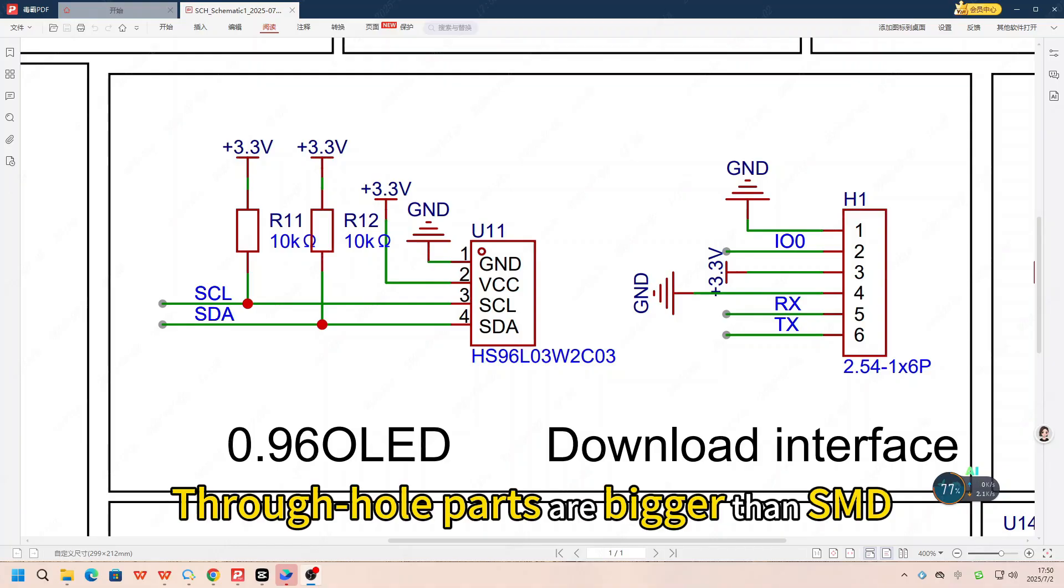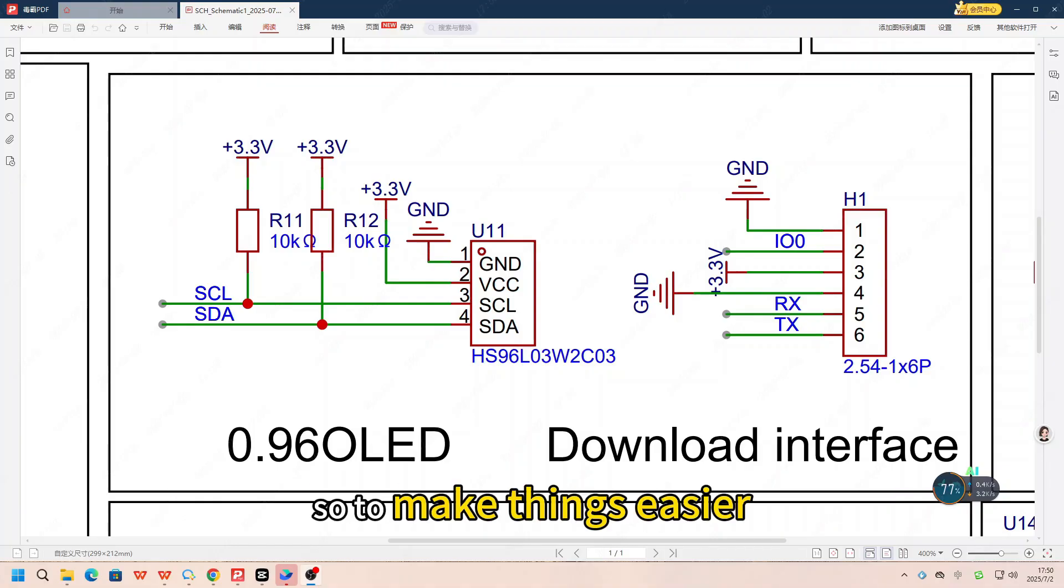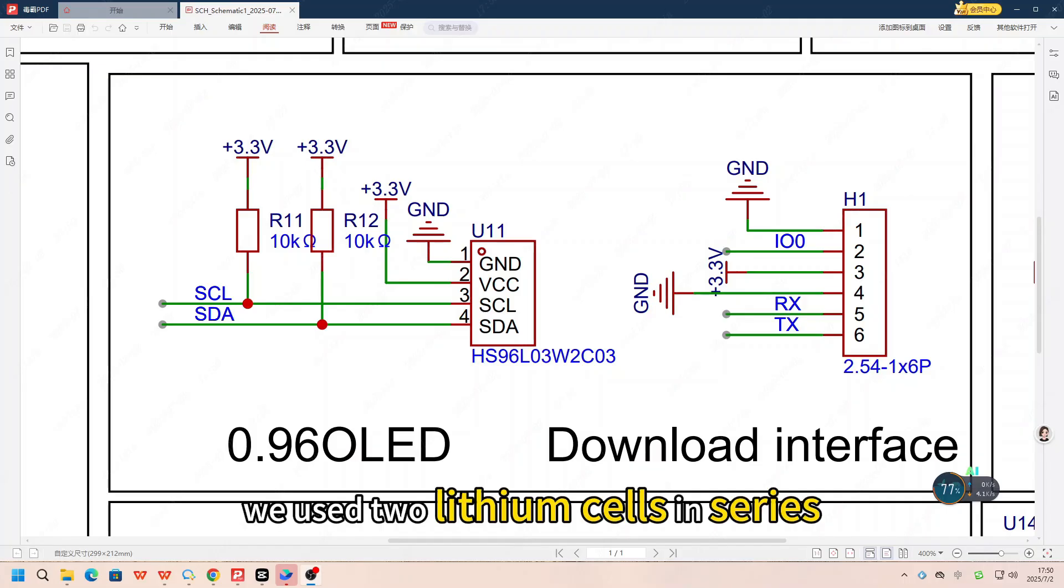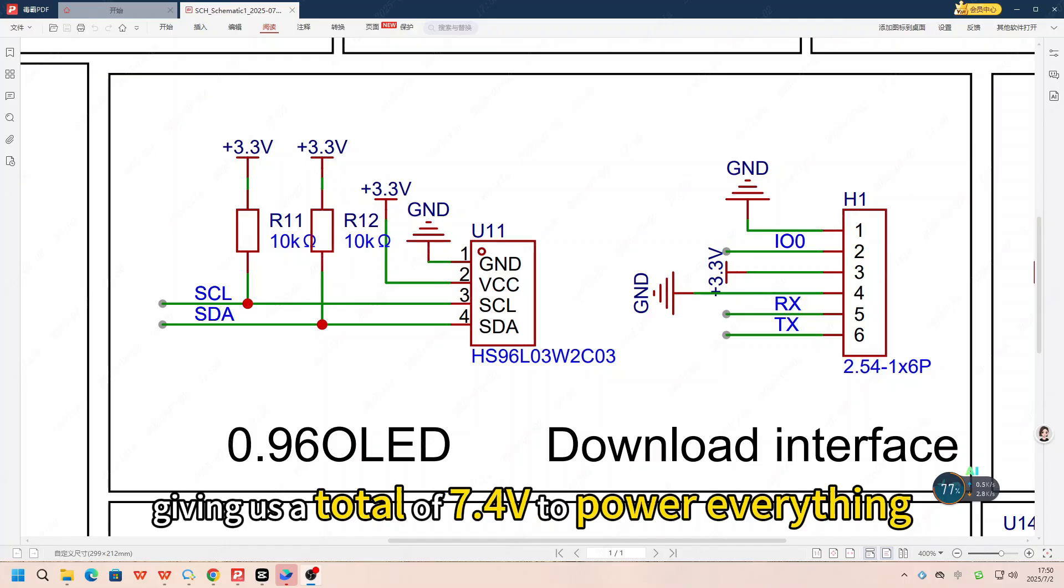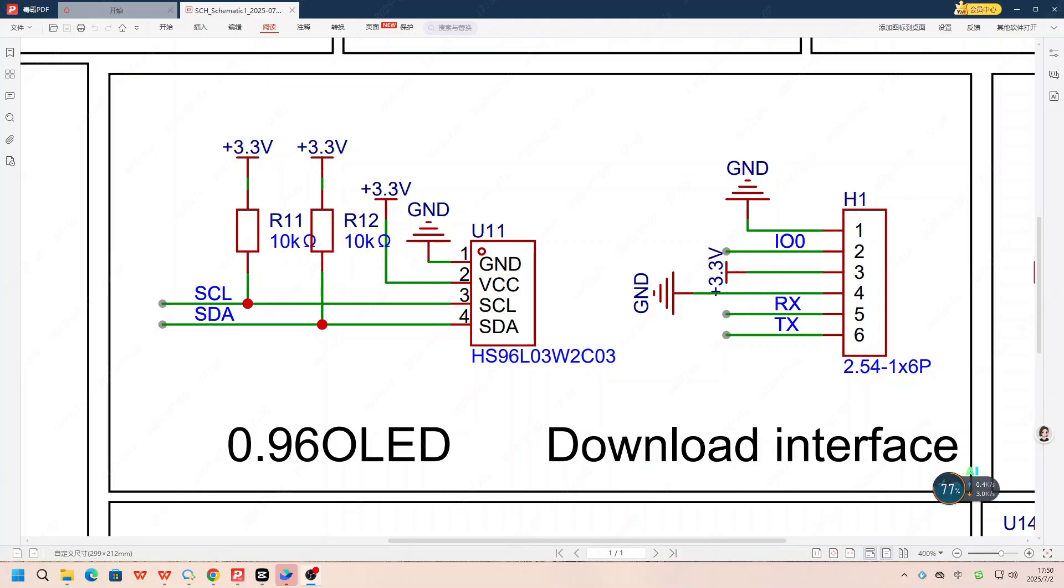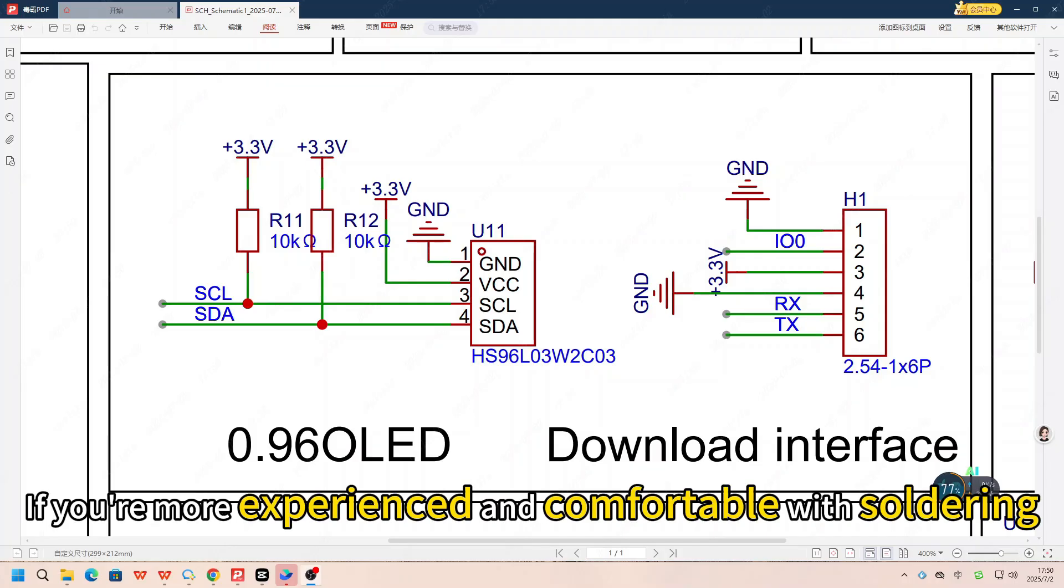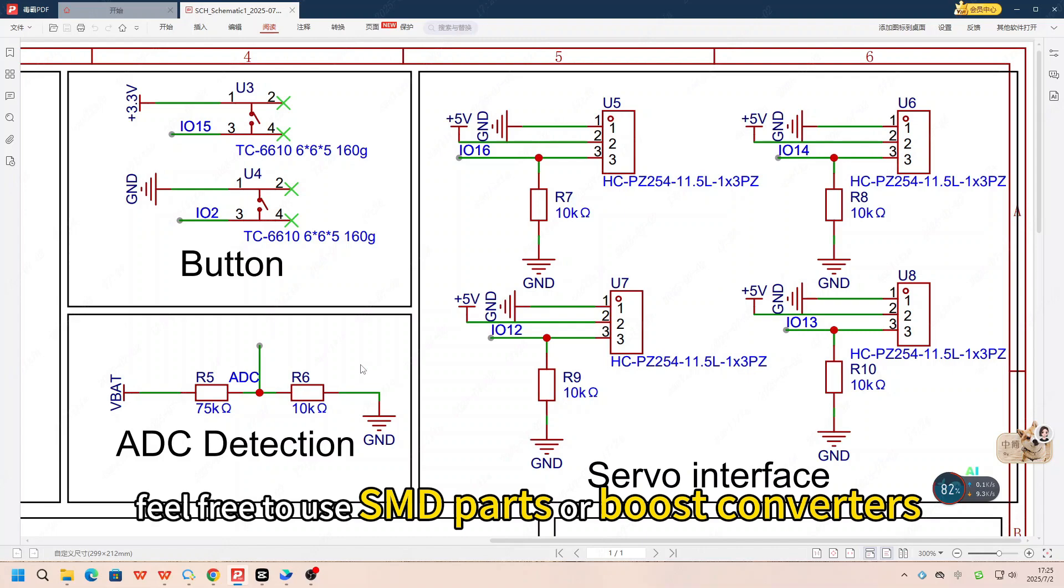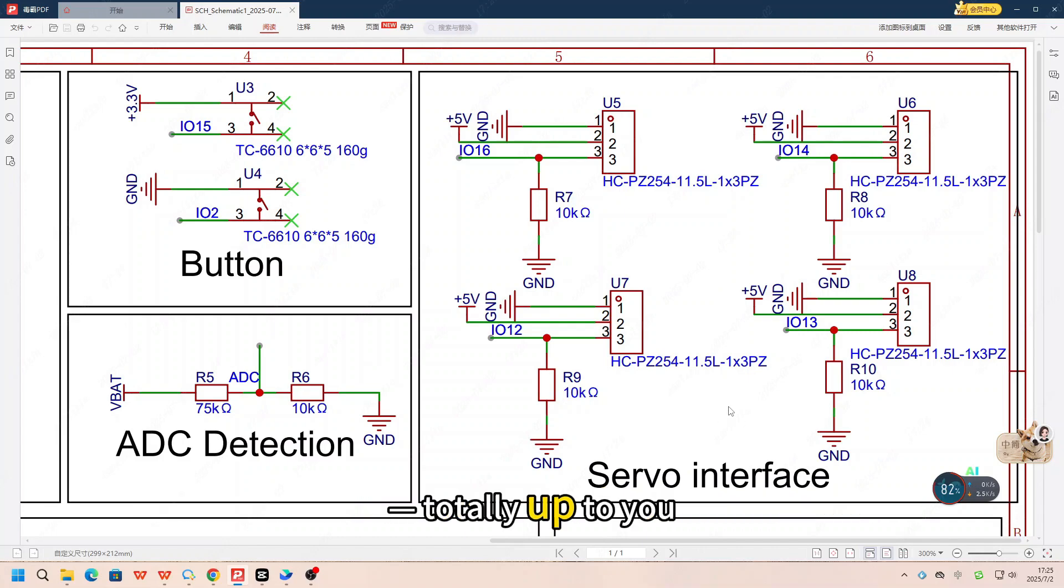Through-hole parts are bigger than SMD, so to make things easier, we use two lithium cells in series, giving us a total of 7.4V to power everything. If you are more experienced and comfortable with soldering, feel free to use SMD parts or boost converters, totally up to you.